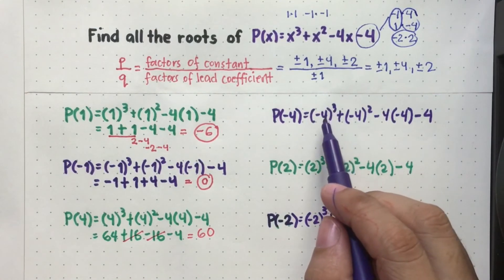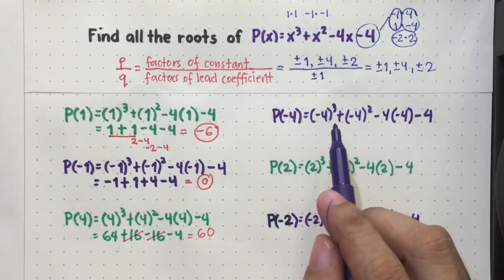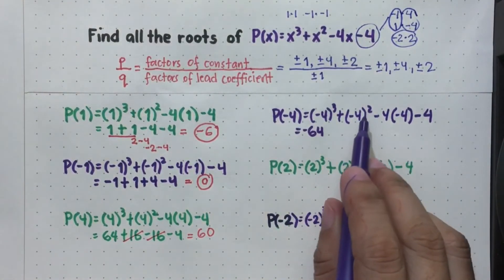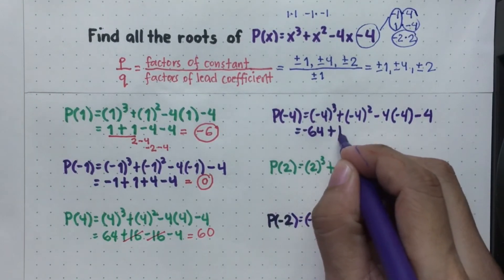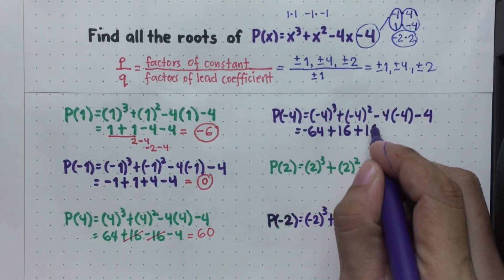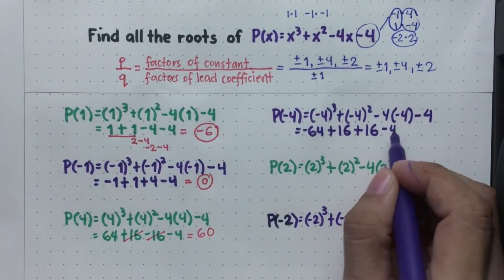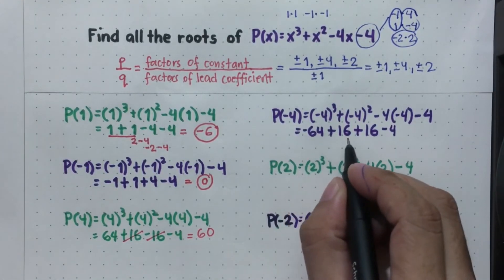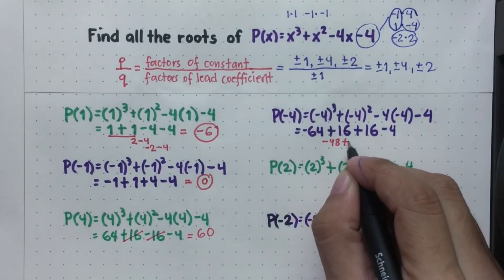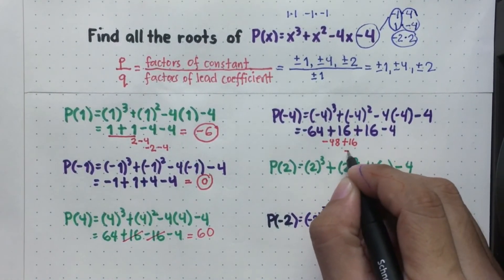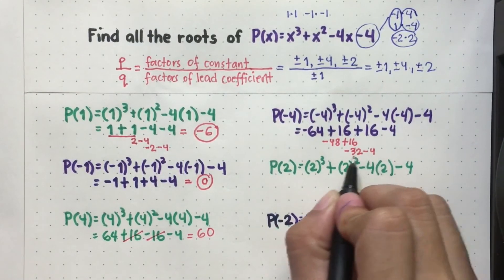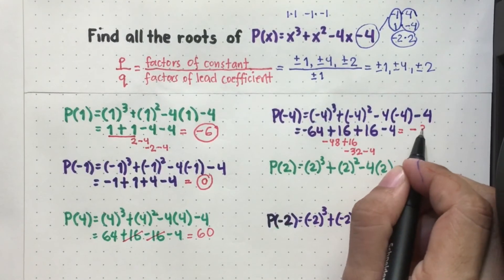Now P(-4): negative 4 cubed — negative 4 times negative 4 is positive 16, times another negative 4, magiging negative 64. Then negative 4 squared is positive 16. Then negative 4 times negative 4 ulit — dalawang negative, so positive 16. Copy negative 4. Solving: negative 64 plus 16 — magkaiba ng sign, so mag-subtract, that will be negative 48. Plus another 16 — different sign pa rin, so negative 32. Minus 4: negative 32 minus 4, parehas negative, so the answer is negative 36. P(-4) is not a root.